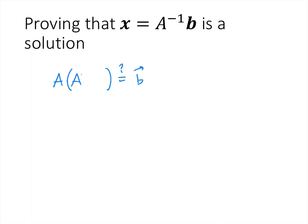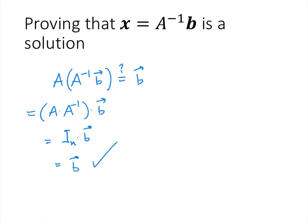We get A times A inverse times the vector B. Since we defined matrix multiplication so that we can regroup parentheses, A times A inverse is the identity matrix. Multiplying the identity matrix by the vector B just gives us the vector B. So this part of the proof — showing that A inverse B is a solution — is done.